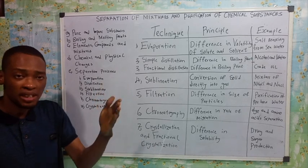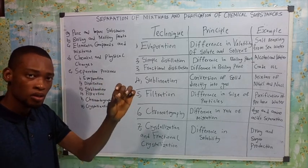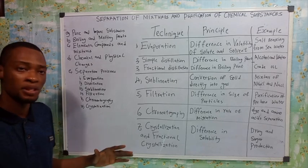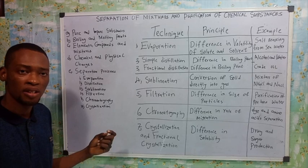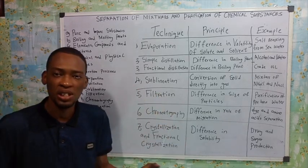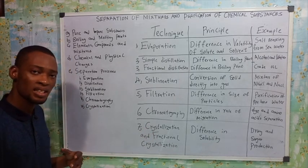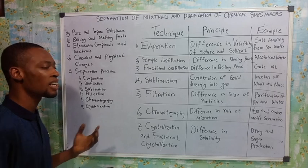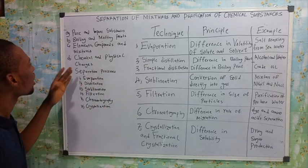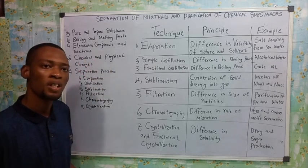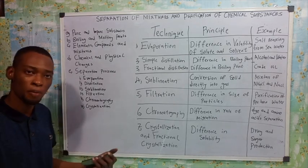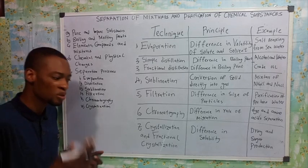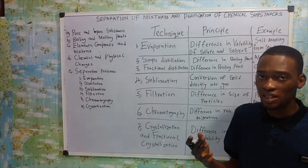A compound is a substance that contains two or more elements chemically combined. The difference between a compound and a mixture is that a compound is formed as a result of a chemical reaction between elements, while mixtures are physically combined with no reaction. Examples of mixtures are air, bronze, and brass; examples of compounds are sodium chloride and ammonium chloride.